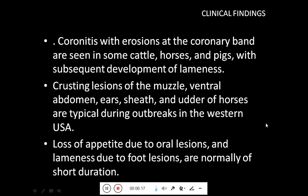Coronitis with erosion at the coronary band near the foot is seen in cattle, horses and pigs, with subsequent development of lameness. The crusting lesions of the muzzle, ventral abdomen, ears, sheath and udder of horses are typically seen during outbreaks in the western USA. Loss of appetite due to oral lesions and lameness due to foot lesions are common and normally of short duration.